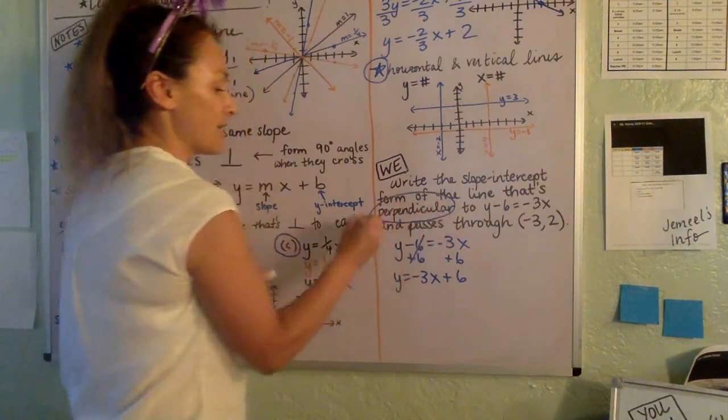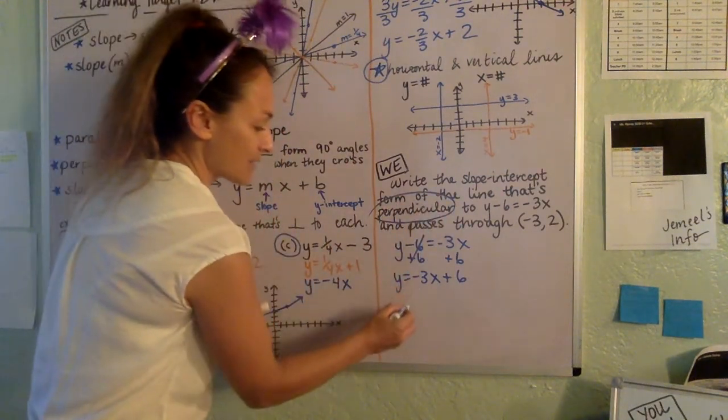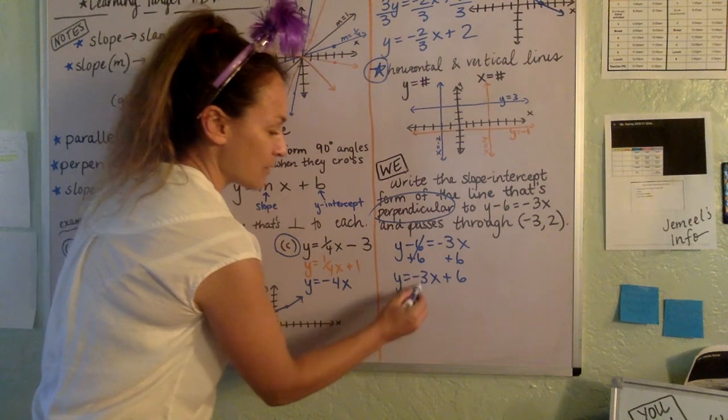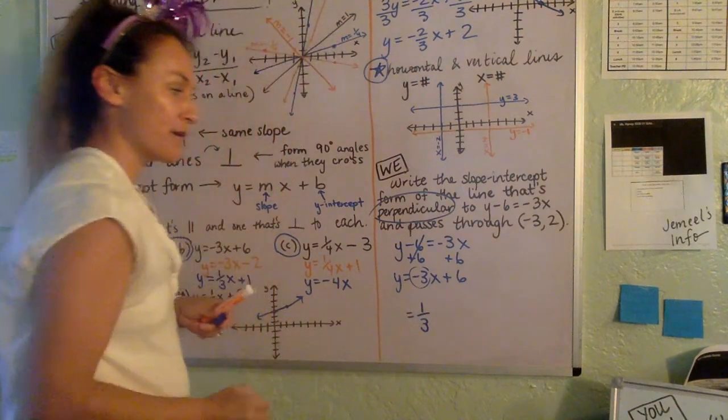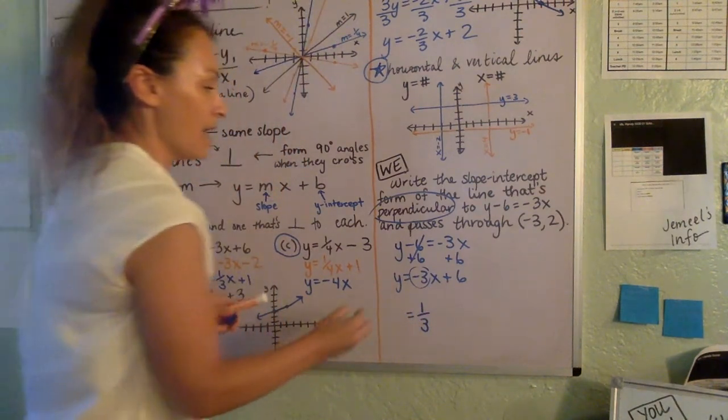Now, if we're looking for a line that's perpendicular to this one, then that means it's going to have the opposite reciprocal slope. So the opposite reciprocal of negative 3 is positive 1 over 3.